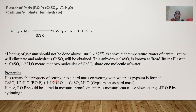A remarkable property of POP is that it sets into a hard mass on wetting with water. This is why POP is used in medicine for setting fractured bones. When POP (CaSO4·½H2O) is mixed with three-fourths of water — replacing the one and a half molecules of water that were eliminated — you get gypsum back, which sets as a hard mass.